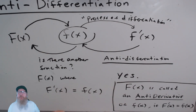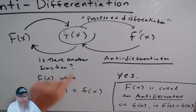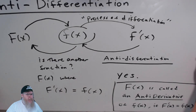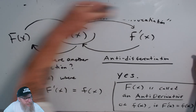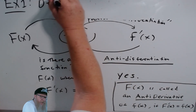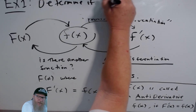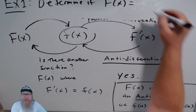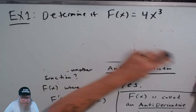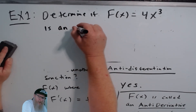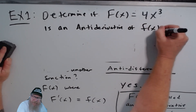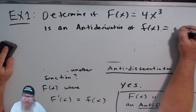There are several different notations for this. We have the prime notation and then we'll also have the dy/dx notation. Let's start with the prime notation and a very specific function: determine if capital F of x equals 4x to the third is an anti-derivative of little f of x equals x squared.